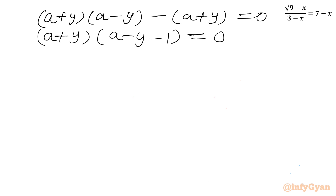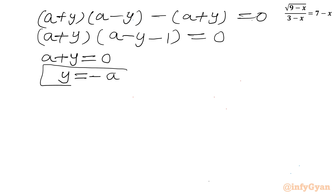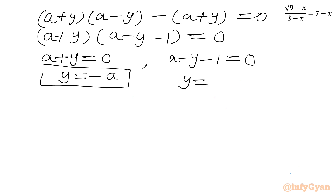From this factored equation we get two cases: either a plus y equals 0, giving y equals minus a; or a minus y minus 1 equals 0, giving y equals a minus 1.